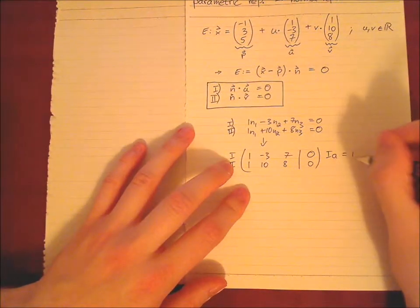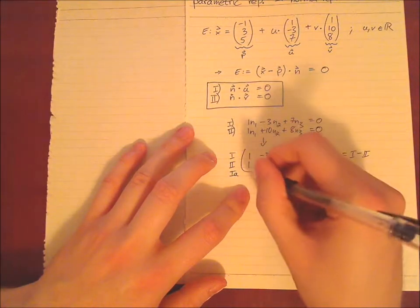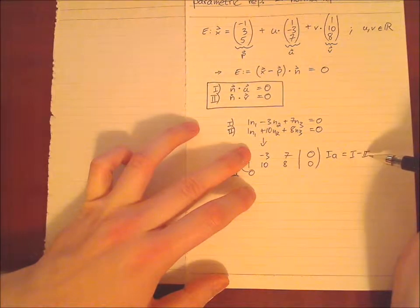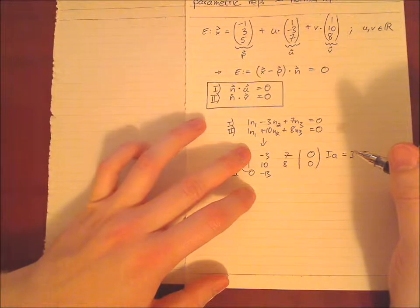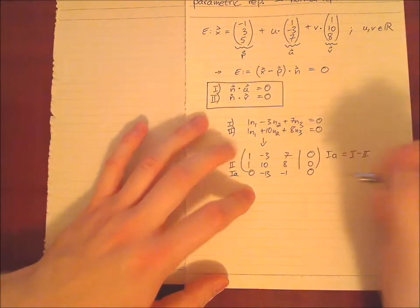Then we say row 1 is simply (1, -3, 7, 0). Then we see row 1 ends with zero. One minus three is minus three, minus ten is minus thirteen. Seven minus eight is minus one, zero.